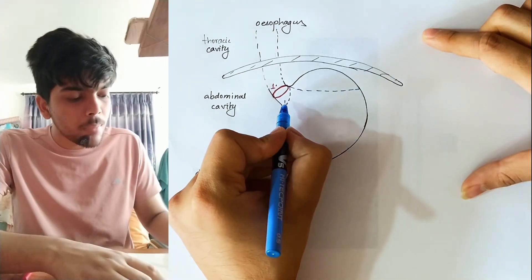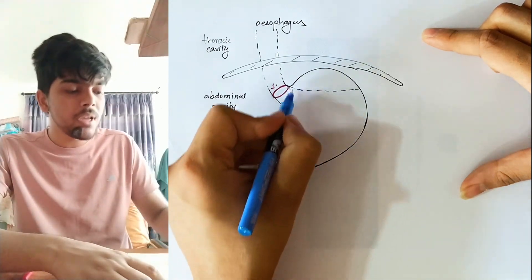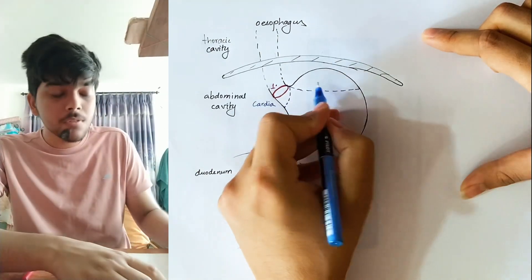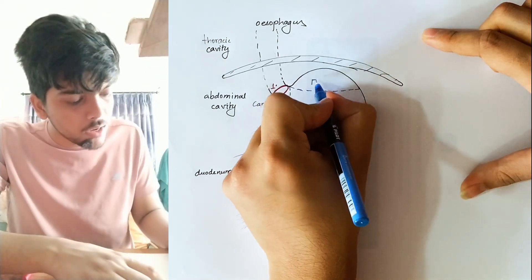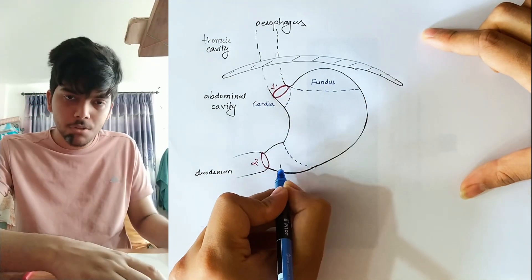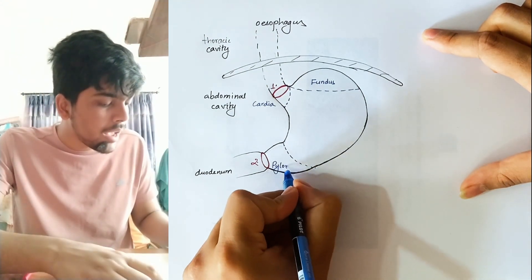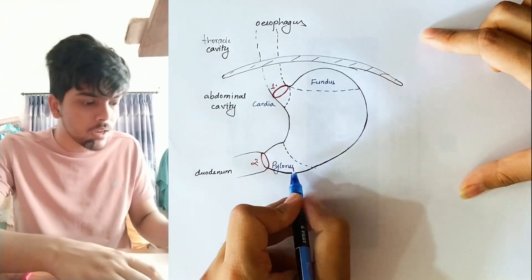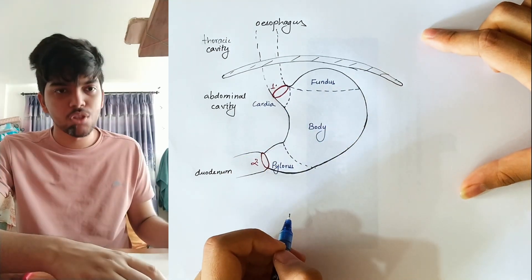To recap: the part of the stomach in direct contact with the esophagus, or the beginning of the stomach, is the cardiac region. The part that forms the hump like a camel's hump is the fundus region. The funnel-shaped part at the end is the pylorus. And the majority part of the stomach between fundus and pylorus is the body. These are the four major parts of the stomach.